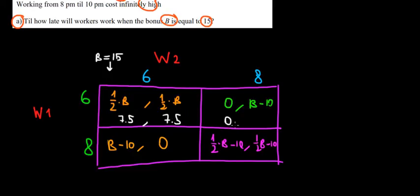In this cell we have 0 and 15 minus 10, that would be 5. Over here we would have 15 minus 10, that's 5 and 0. Let me put them in brackets to know that these are the payoffs. Over here we have 1 over 2 times 15, that's 7.5 minus 10, that's minus 2.5 and the same goes over here minus 2.5. Now let's play the game and see what the decision is going to be.